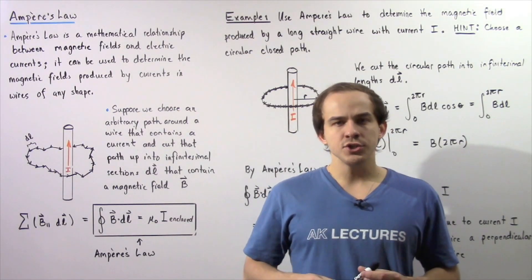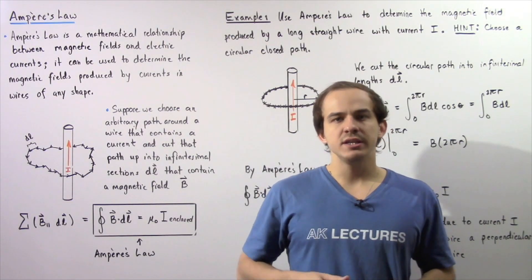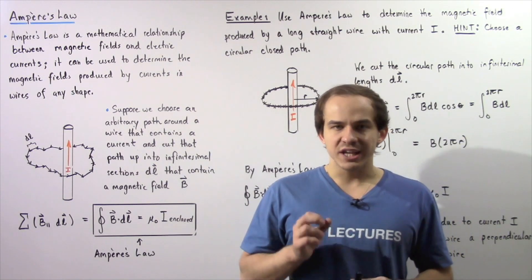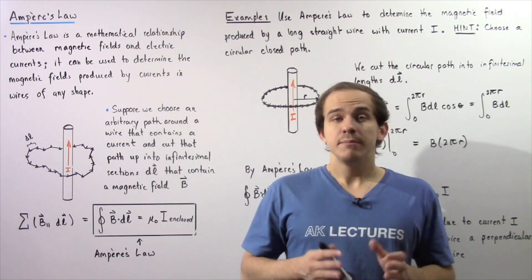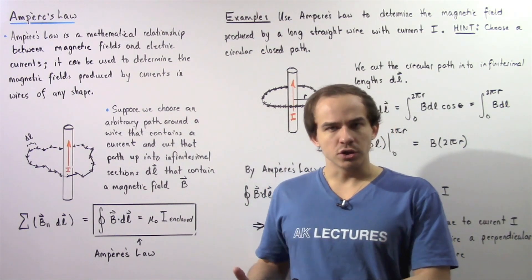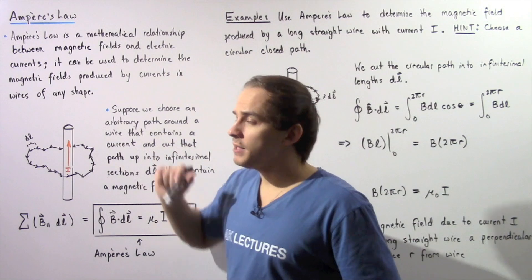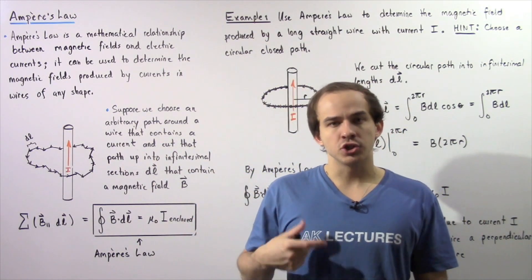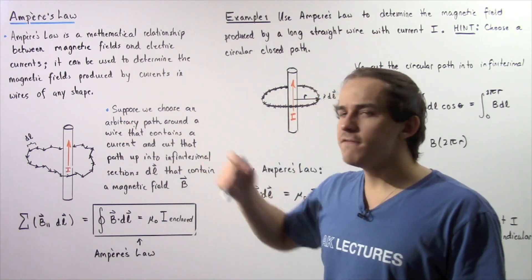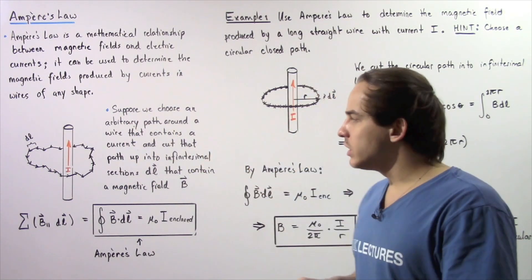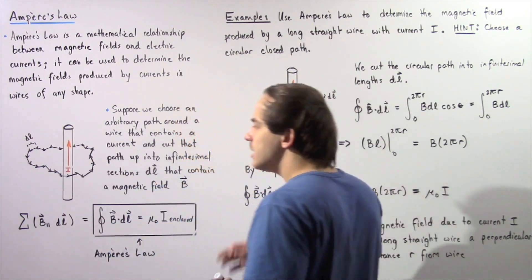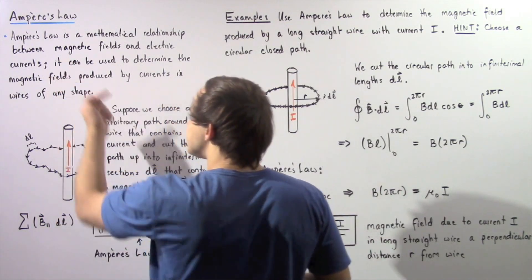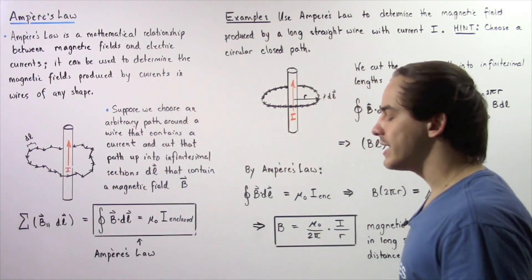Ampere's law essentially gives us a relationship between electricity and magnetism — that is, it gives us a mathematical relationship, an equation, between magnetic fields and electric currents. So we can use Ampere's law to calculate the magnetic field that is produced by an electric current moving inside a wire of any shape. Let's begin by looking at a wire that carries an electric current given by I in the positive direction along the Y axis.